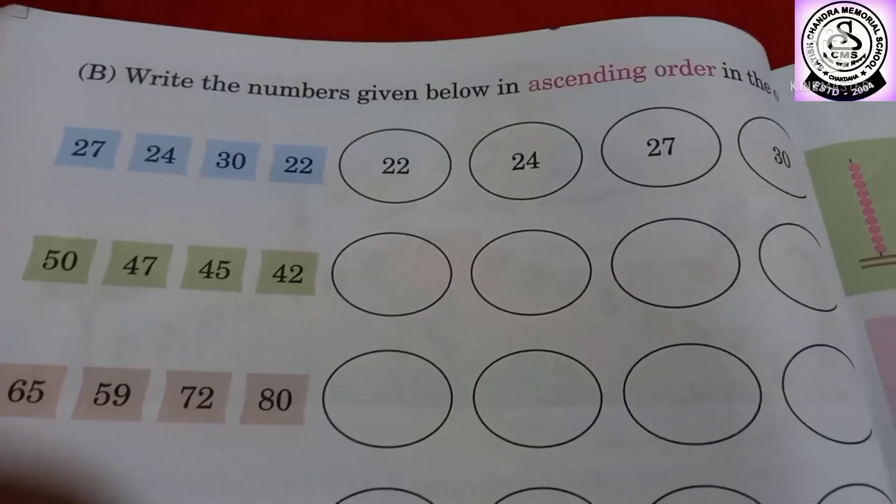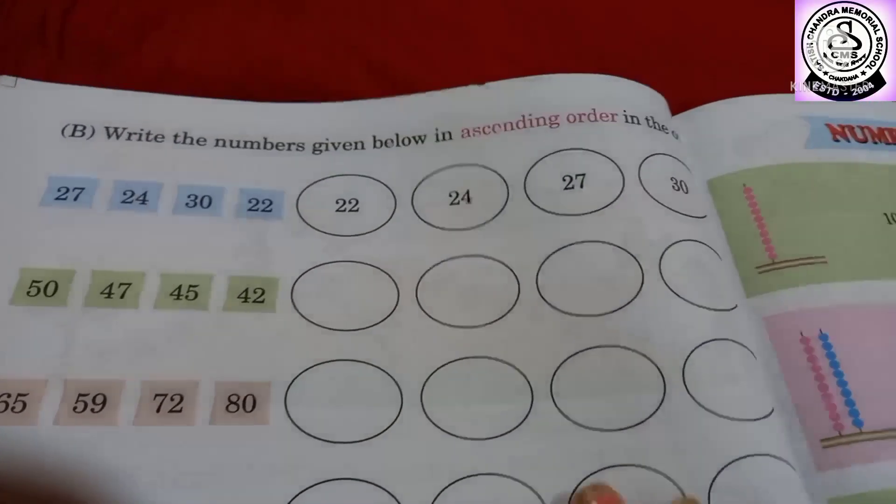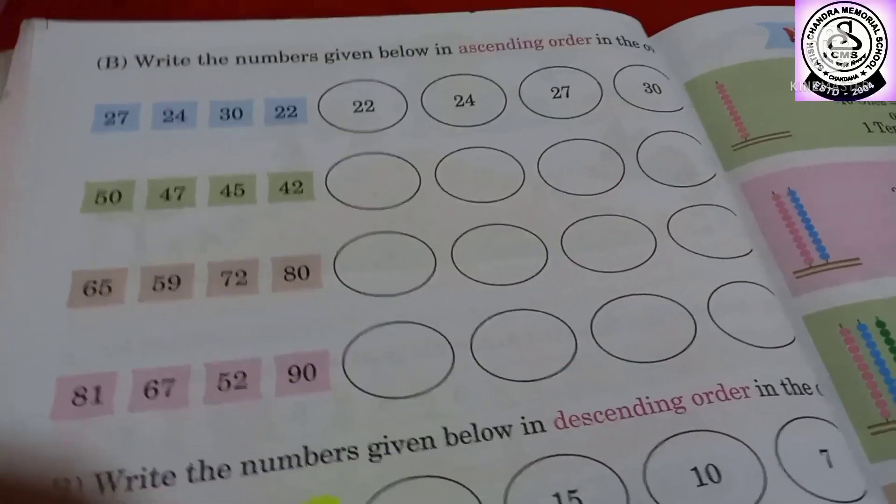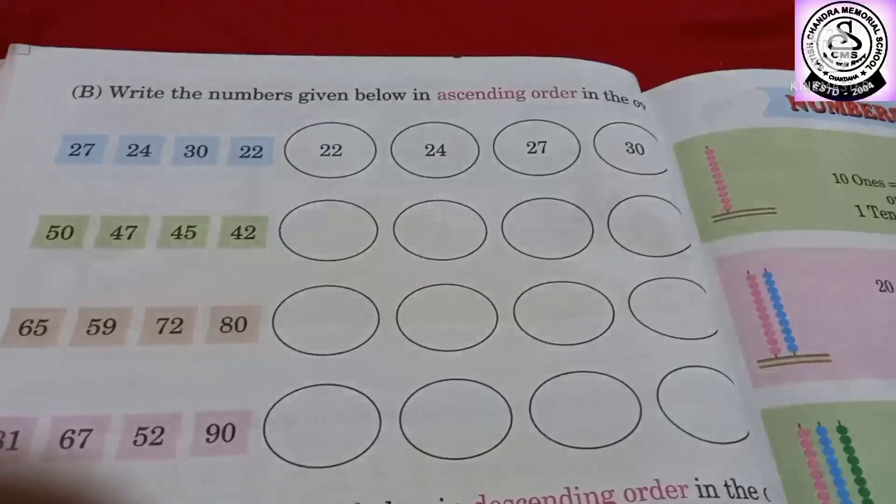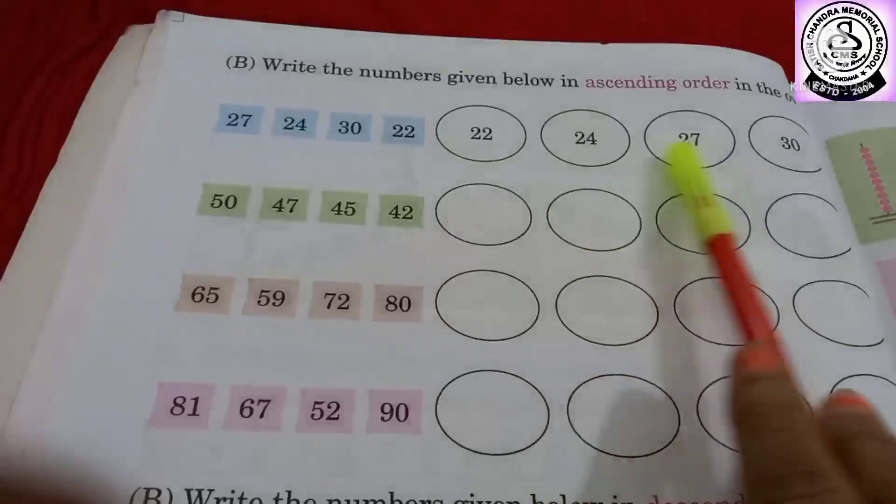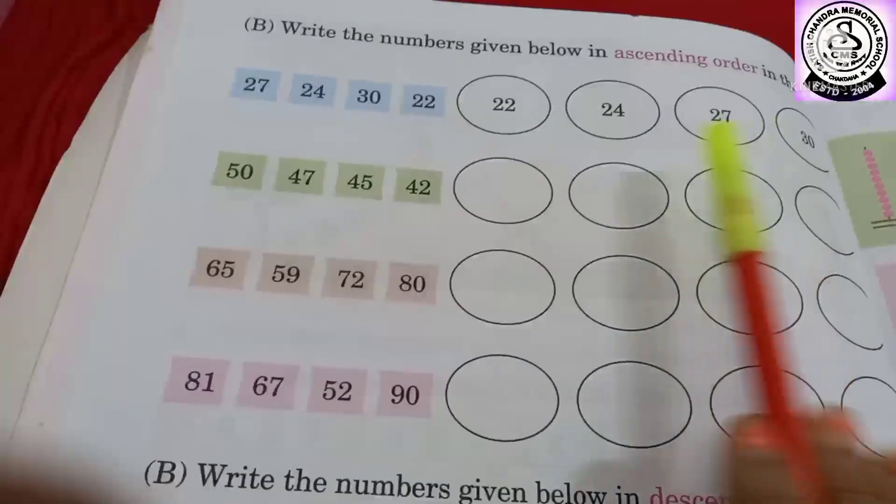Write the numbers given below in ascending order in ovals. So what you have to do? Some numbers are here. You have to arrange in ascending order. So number one already done.